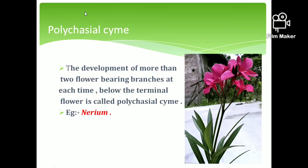The last type of cymose inflorescence is polychasial cyme. In polychasial cyme, the main axis terminates in a flower, and more than two lateral branches arise from it. Every branch terminates in a flower. An example of polychasial cyme is Nerium. In the figure, you can see that each branch has multiple flowers.